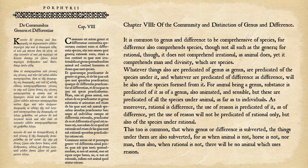Whatever things are predicated of genus as genus are predicated of the species under it, and whatever are predicated of difference as difference will also be predicated of the species formed from it. Animal being a genus, substance, animated, and sensible are predicated of it — and these are predicated of all the species under animal, as far as to individuals. Likewise rational being a difference, the use of reason is predicated of it, and also of the species under rational. Thinking back to the Porphyrian tree diagram, each subset is included in the step above it — individual is included in species, species in genus, genus in the genus above that, all the way up to the category.